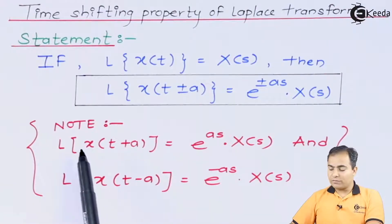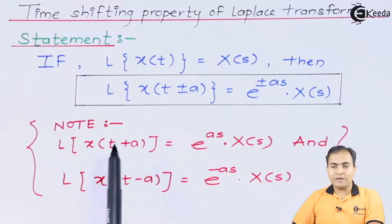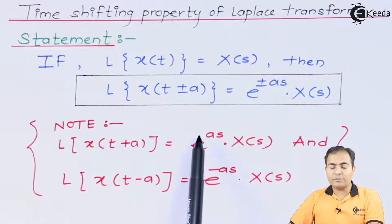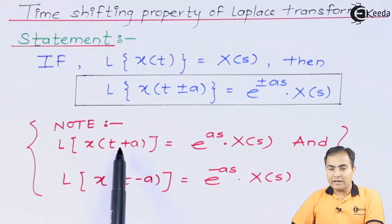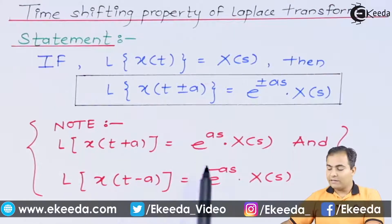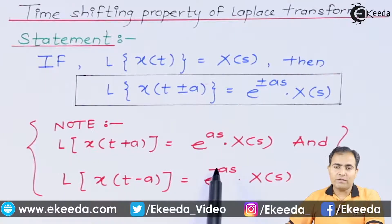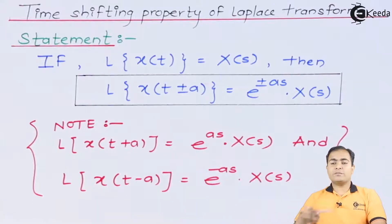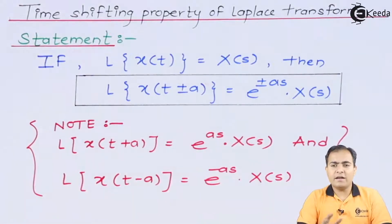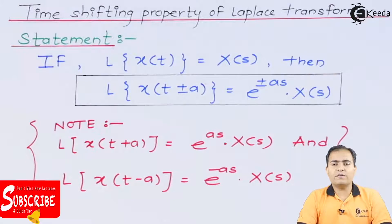The Laplace transform of x(t + a) gives e to the power plus as — the order of the exponential is positive if the delay is positive. Similarly, if the delay is negative, then the power of the exponential is also negative. So let's prove this so that you can understand how to solve the time shifting property of Laplace transform.